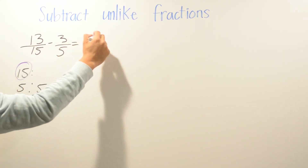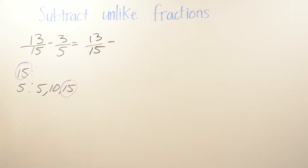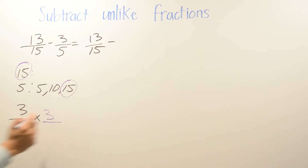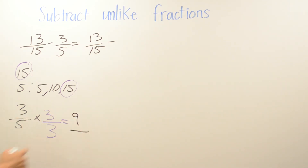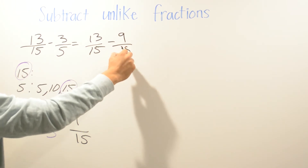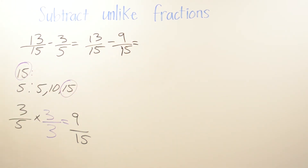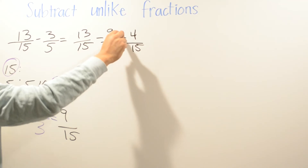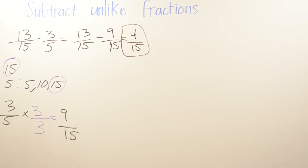Now I'm going to change 3/5. To find the least common multiple I multiply: one, two, three — so I multiply by 3. Whatever I do on the top I also have to do on the bottom: 3 times 3 is 9, and 5 times 3 is 15. So 13 minus 9 is 4, and the denominator is 15. Your answer is 4/15.